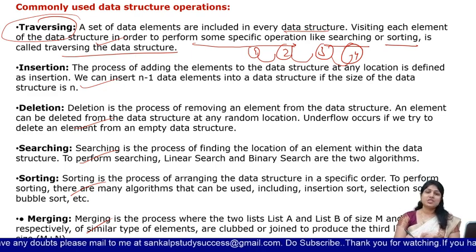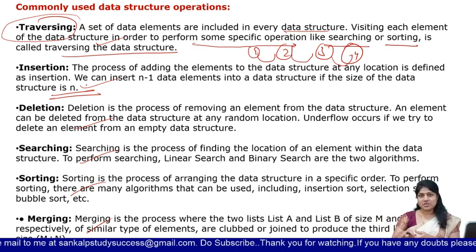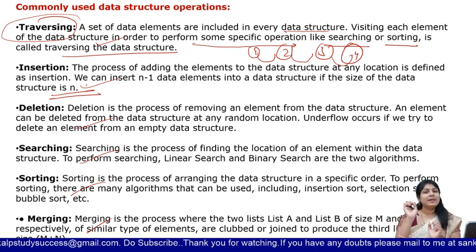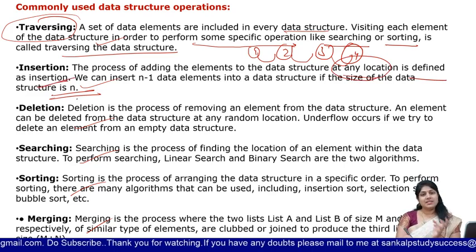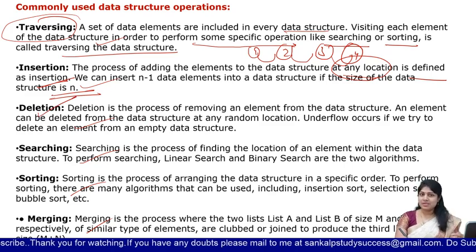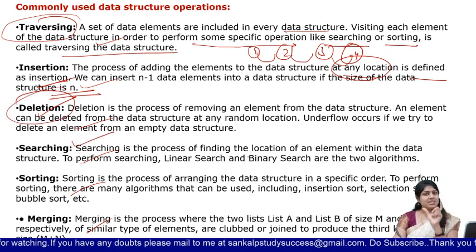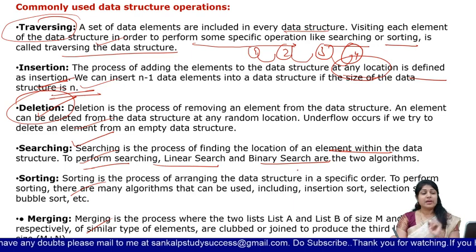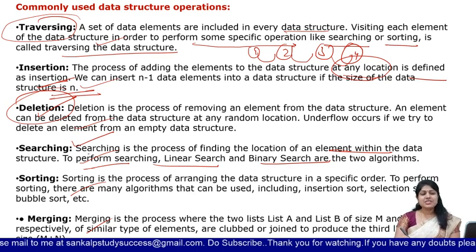The next one is insertion. Insertion operation is simple — we are adding new elements into our data structure. That depends on the data structure: stack insertion, linked list insertion, queue insertion are different. The process of adding elements to the data structure at any location is nothing but insertion. And the next one is deletion — deletion is the process of removing an element from the data structure.